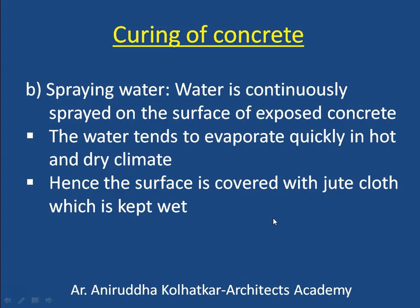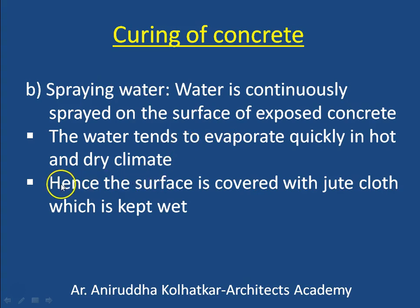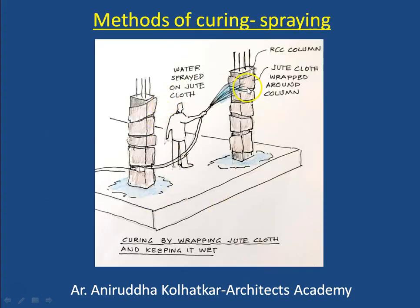The second method is called spraying of water, where water is continuously sprayed on the surface of exposed concrete. The water tends to evaporate quickly in hot dry climate, which is especially true in India. So even though we spray water continuously on the surface, it has a tendency to quickly evaporate. It is always better to cover the surface with jute cloth and then keep the jute cloth continuously wet by spraying water on it. In this picture you can see that the columns are wrapped around by jute cloth and they are being wetted by spraying water on top of them.